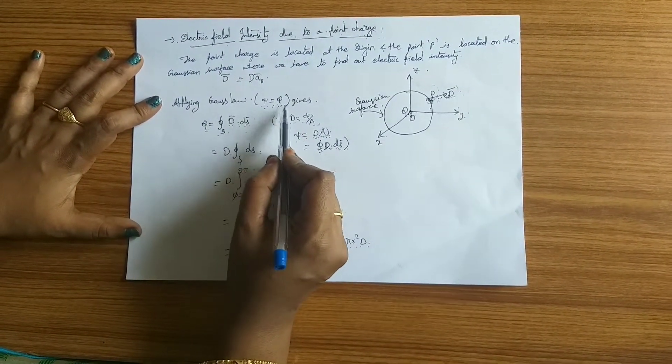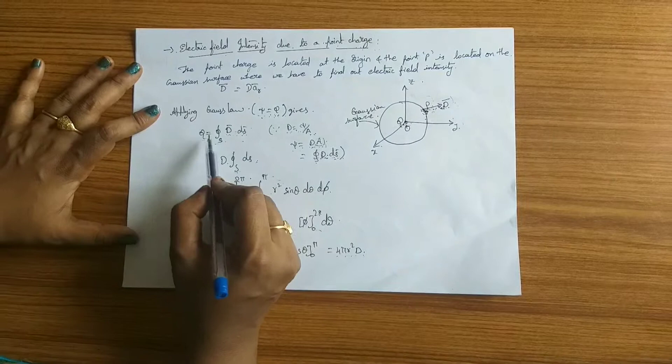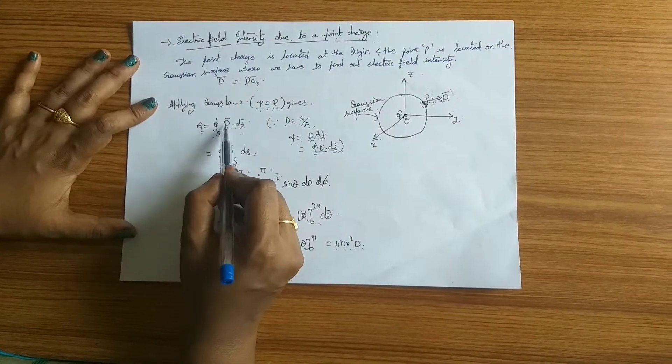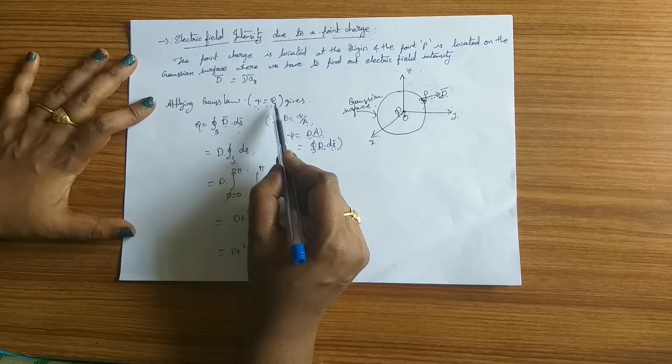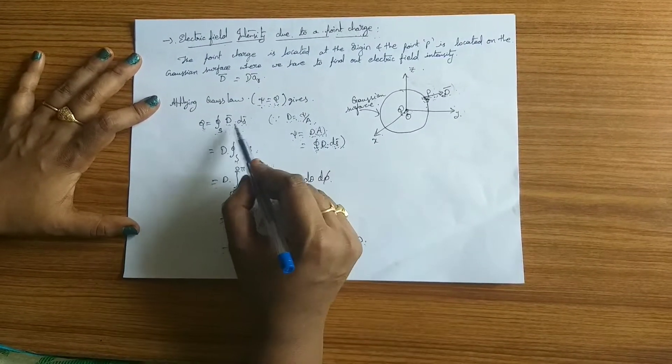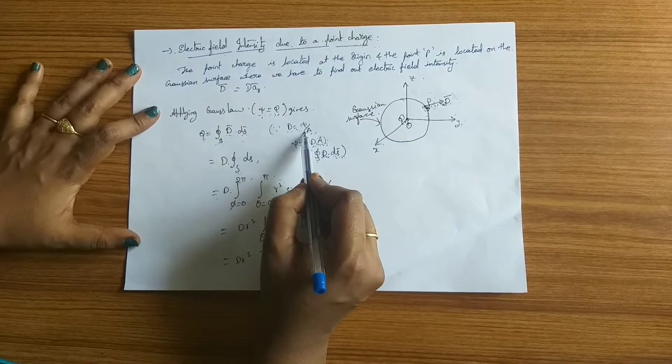Now the Gauss law is ψ equals q. So q equals closed surface integral over s D dot ds, where ψ is the electric flux and q is the charge enclosed over the surface, and the electric flux density D equals ψ by A.